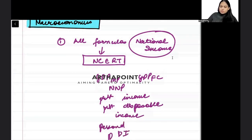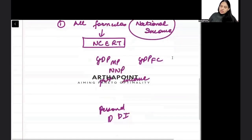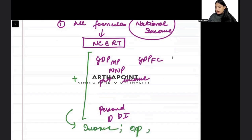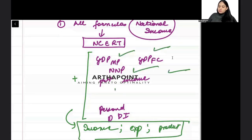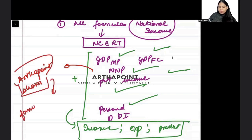Personal disposable income — you have to know everything about it. In the same chapter, you should know how to calculate GDP using different methods: the income method, expenditure method, and the product method — also called the value added method. You should be very aware of these three methods and all possible formulas. You can also refer to Artha Point Shorts on YouTube, which has a formula sheet for macroeconomics.